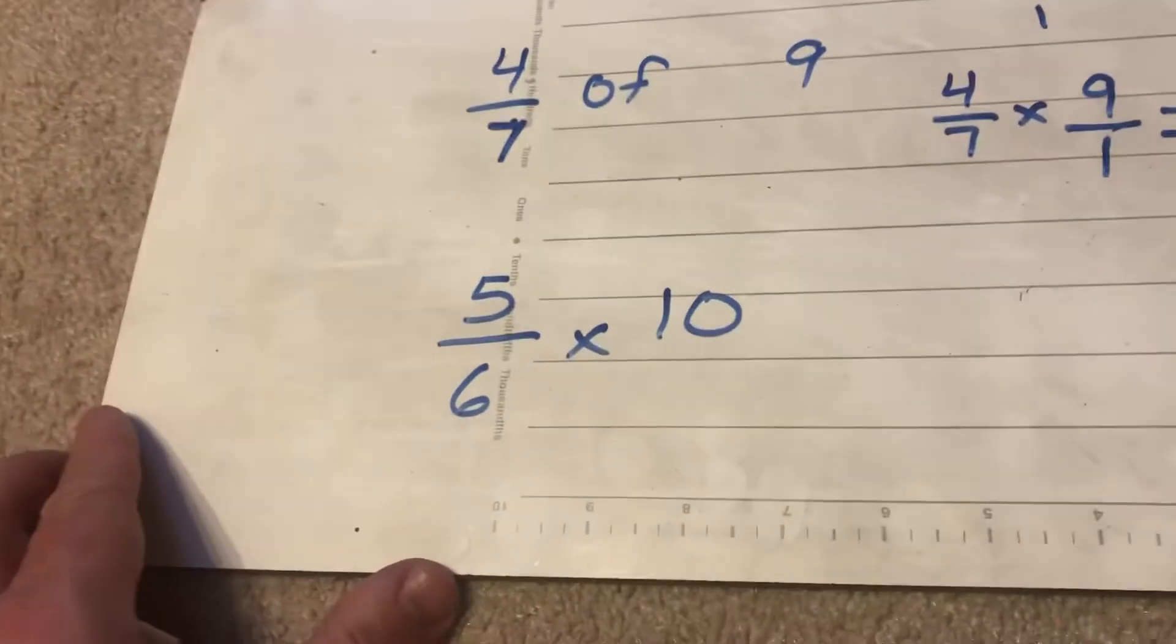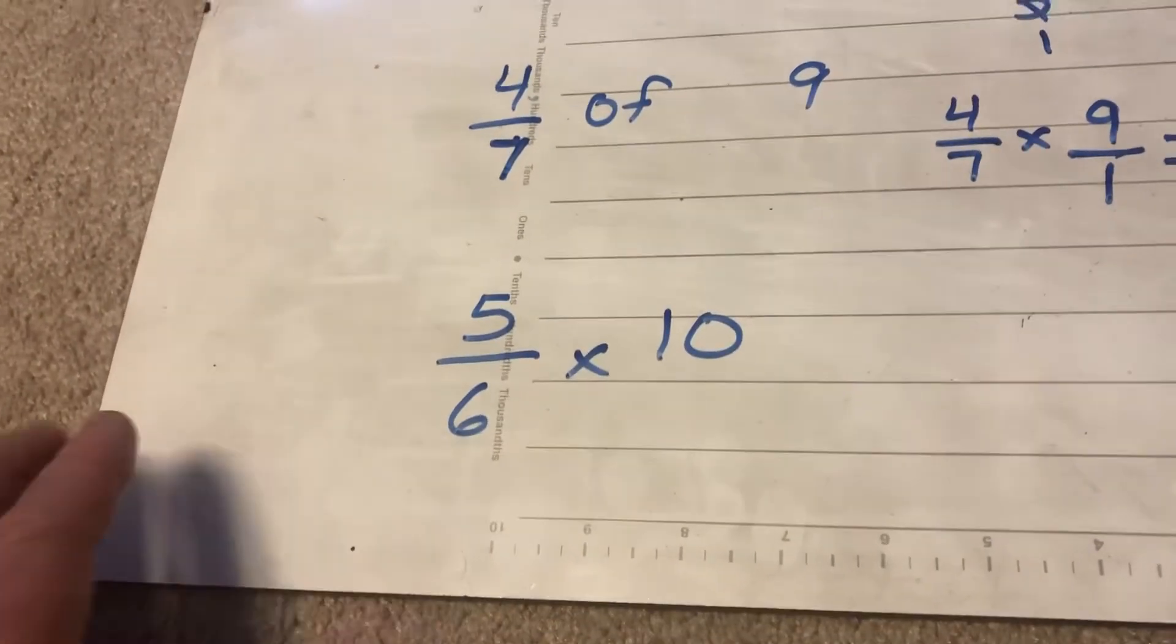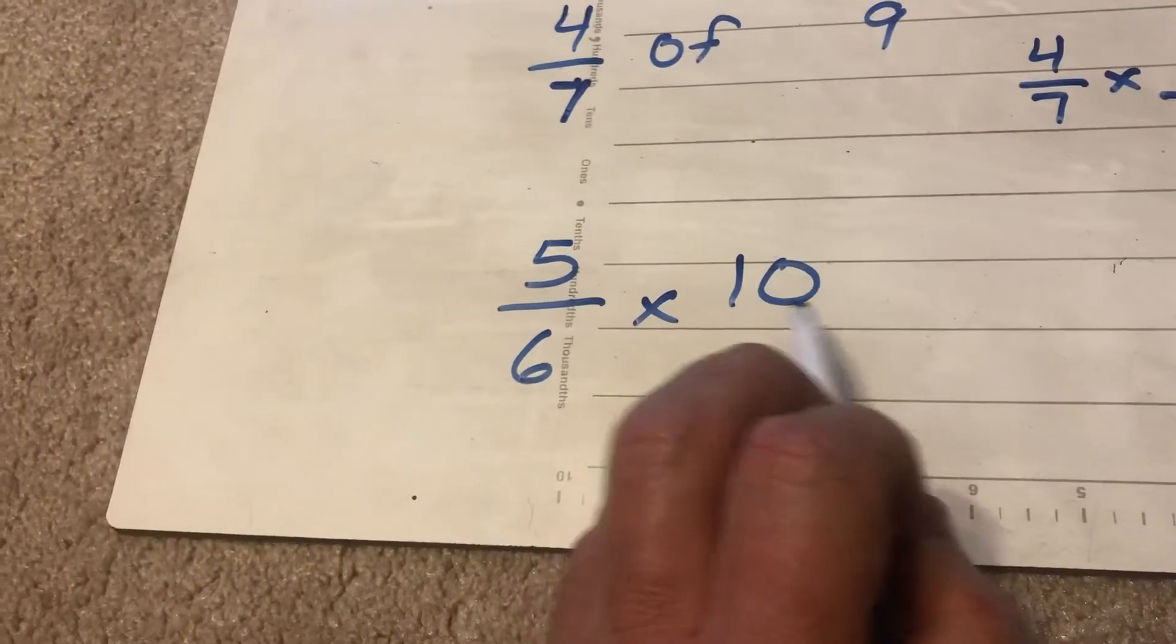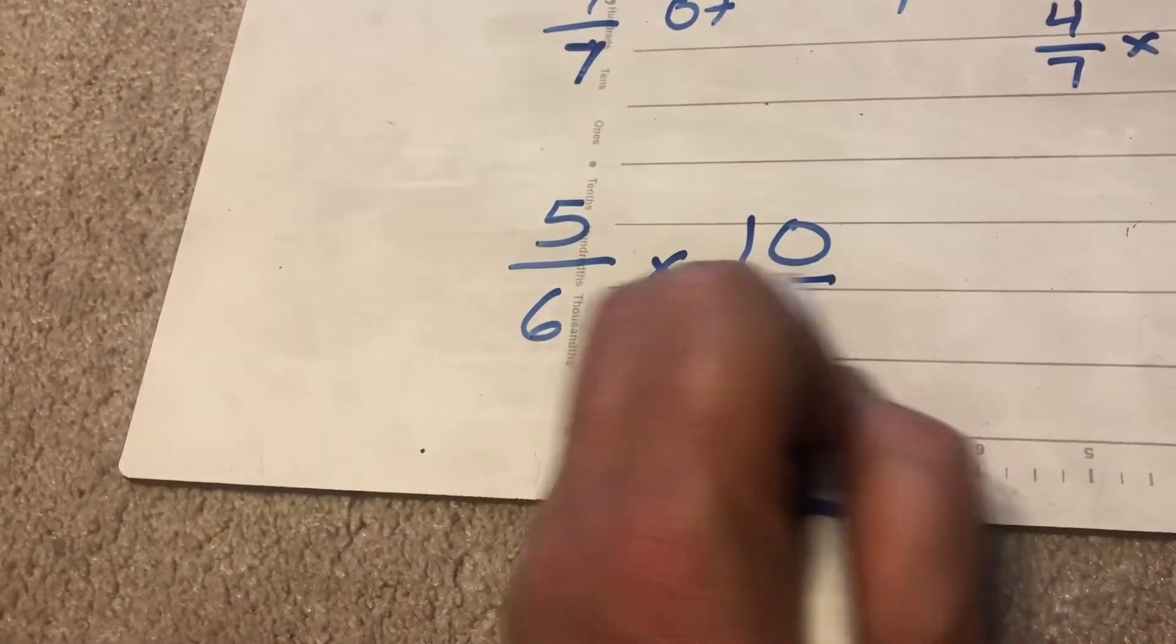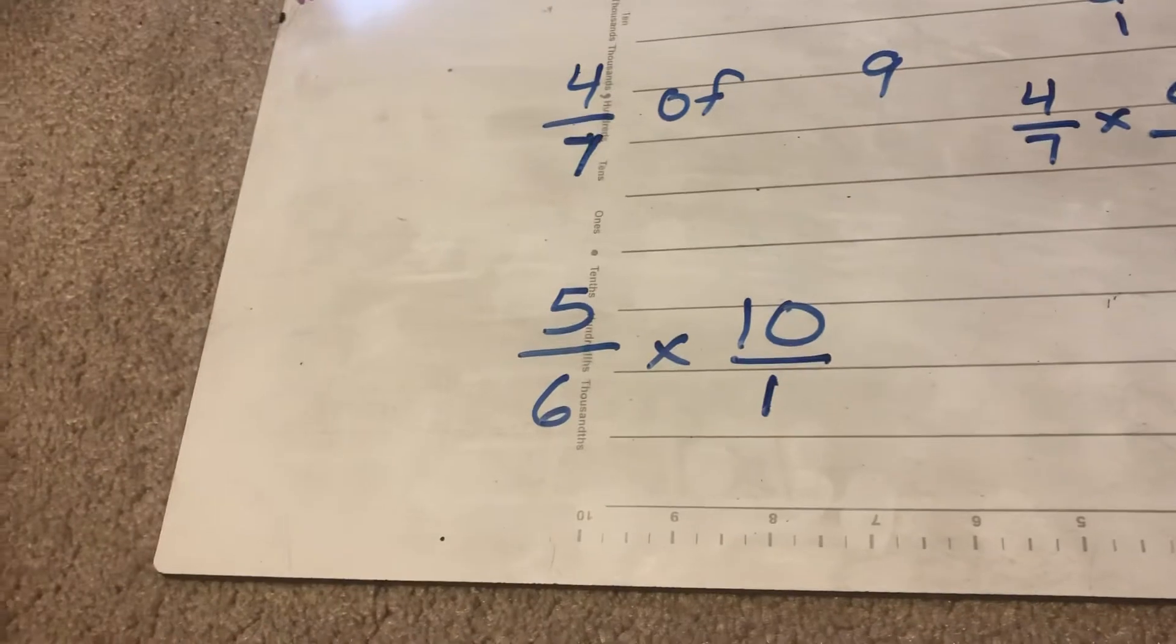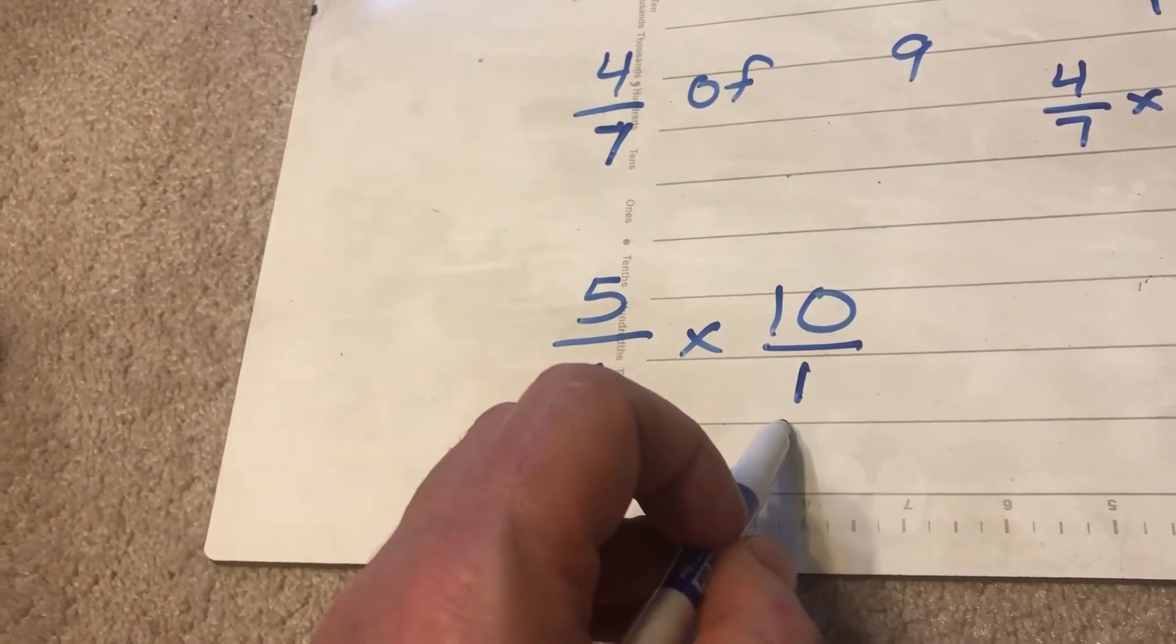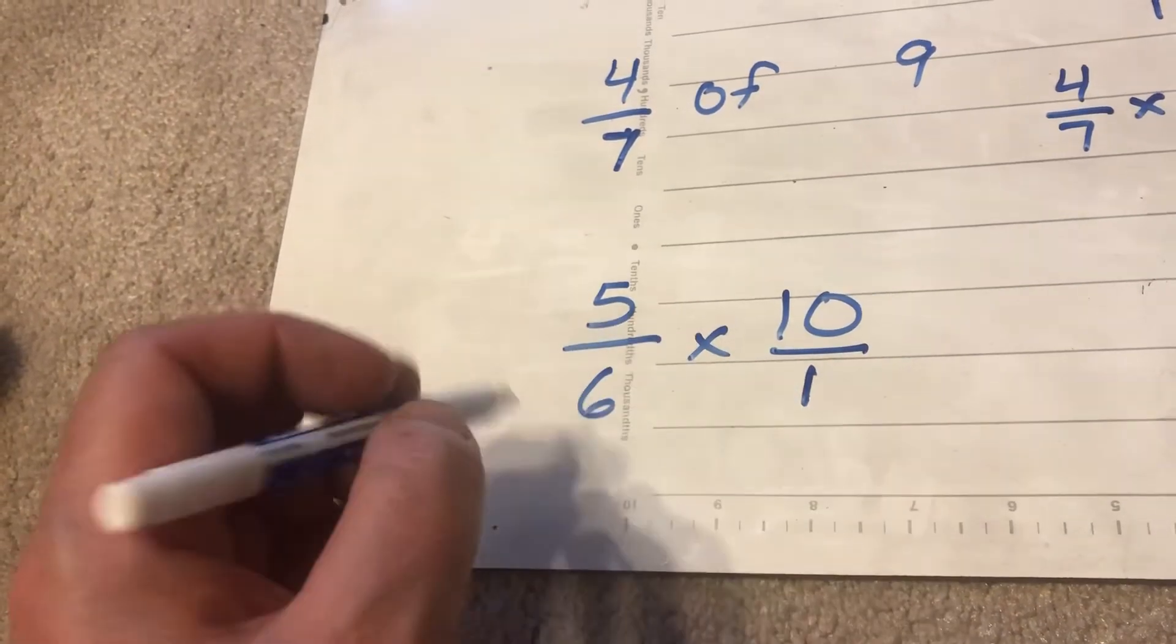I end up with 5 and 1 seventh. Alright. 5 sixths times 10. Well this one I'm just going to work from the one that's right here. Once again, whole number 10 becomes 10 over 1. I can't cross check a 5 and a 1. Nothing can go into 5 and 1 except 1.